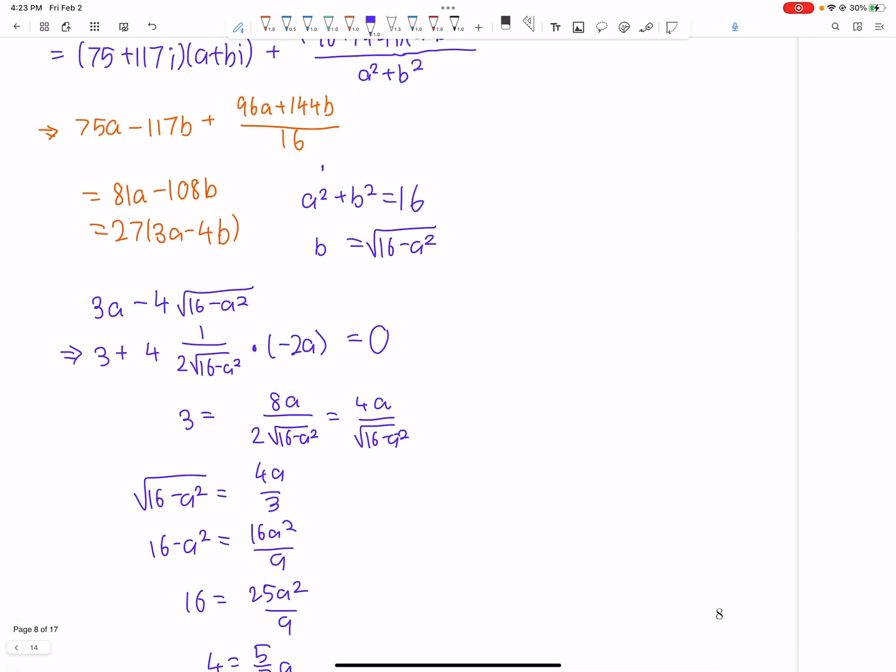Okay, so a is 12 fifths. We can easily sub to get that b is 16 over 5 or negative 16 over 5. But obviously we want negative 16 over 5 so this thingy is bigger. And now it's just simple. We plug it in. 27 times 36 over 5 plus 64 over 5. The inside part is 100 over 5, 20. So 540. And that's our answer.